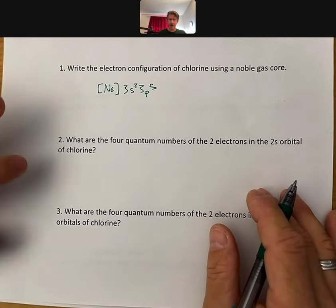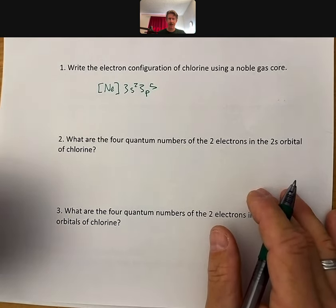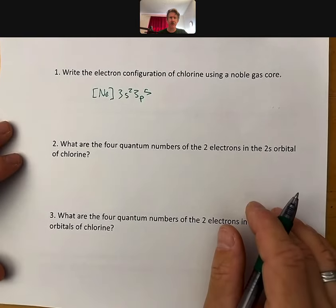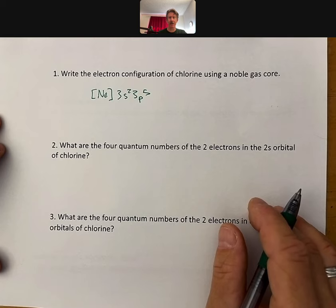This video just covers numbers 2 and 3 on this page and one of the numbers on the next page. It says what are the four quantum numbers of the two electrons in the 2s orbital of chlorine.